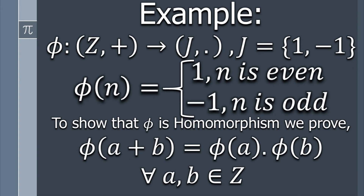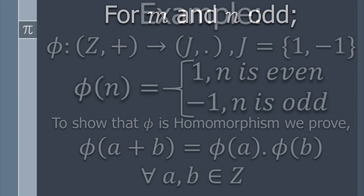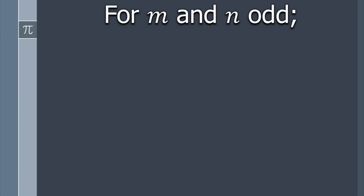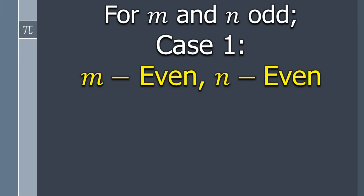This must be true for all elements of ℤ. To prove that, let m and n be integers of ℤ, and we divide the problem into three cases. In case number one, we take m and n both as even integers in ℤ.